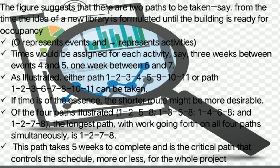Of the four paths illustrated — 1-2-5-8, 1-3-5-8, 1-4-6-8, and 1-2-7-8 — the longest path, with work going forth on all four paths simultaneously, is 1-2-7-8. This path takes five weeks to complete and is the critical path that controls the schedule more or less for the whole project.